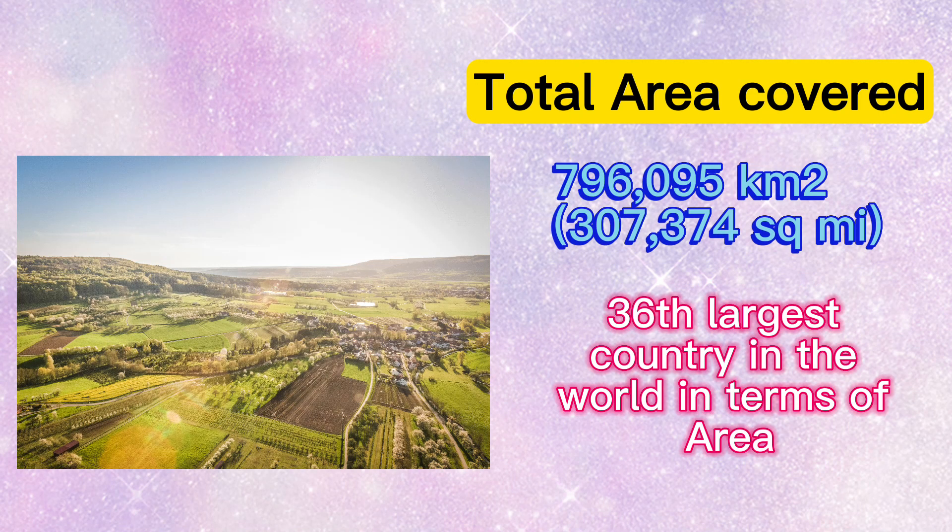Total area covered: 796,095 square kilometers, or 307,374 square miles. Pakistan is the 36th largest country in the world in terms of area.